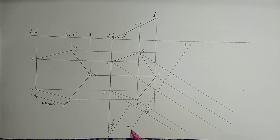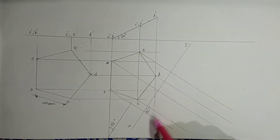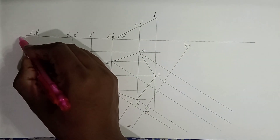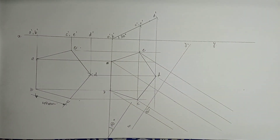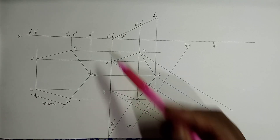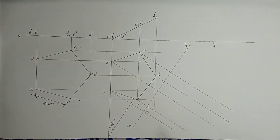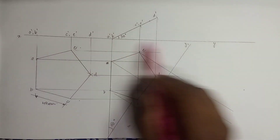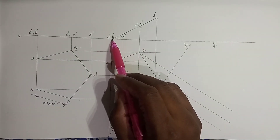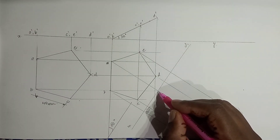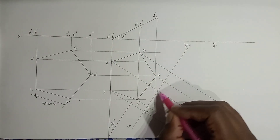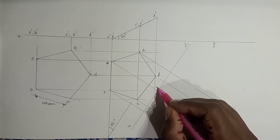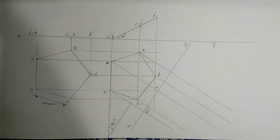We will get the front view of this shape. When we refer to X1Y1, we need to measure the distances from the XY line — this is our XY line. The projector of A falls on XY, so we measure that distance and transfer it. We place this point as A1-dash in the auxiliary front view.